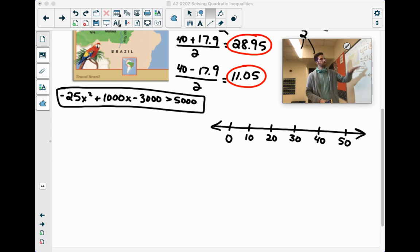So we just solved it with the quadratic formula and our essential numbers that we're looking at are 28.95 and 11.05.